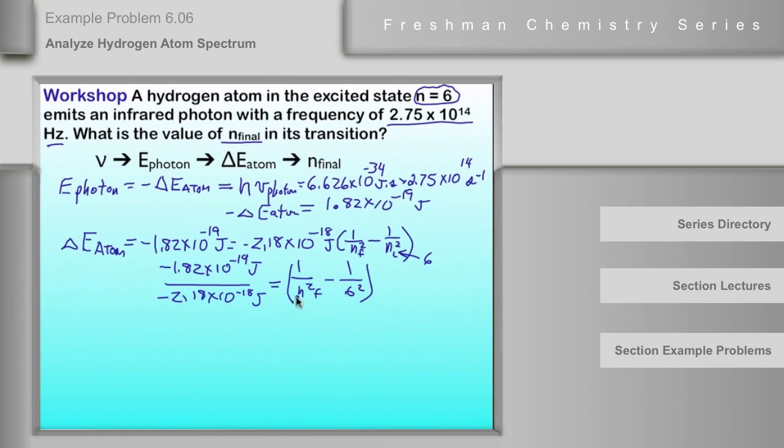We've got it down to 1 variable here, so we can solve it. And I got 1 over n squared final is equal to 0.111 after I evaluated these things. And then n squared final is equal to 9. And n final is equal to 6.